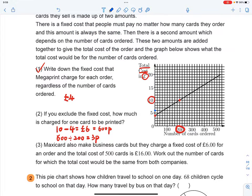For an order, the total cost of 500 cards is 16 pounds. Let's try to find it. This is 500. And you have to find 16. So this point will be the cross point, right?